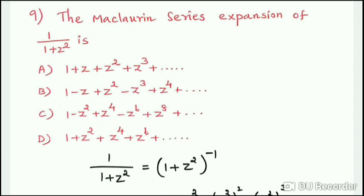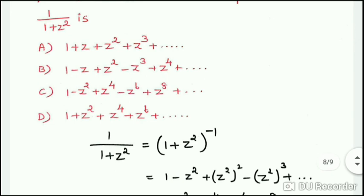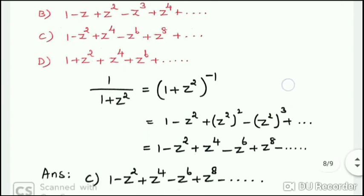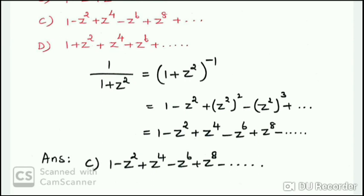Next question: the Maclaurin series expansion of 1/(1 + z²). We write 1/(1 + z²) as (1 + z²)^(-1). The expansion is 1 - z² + (z²)² - (z²)³ + etc., which equals 1 - z² + z⁴ - z⁶ + z⁸ - ... Option C: the answer is 1 - z² + z⁴ - z⁶ + z⁸ ...